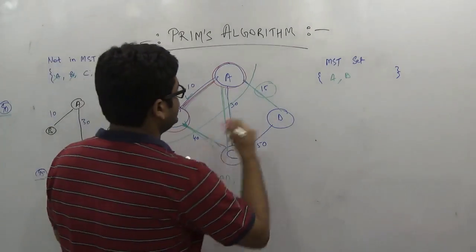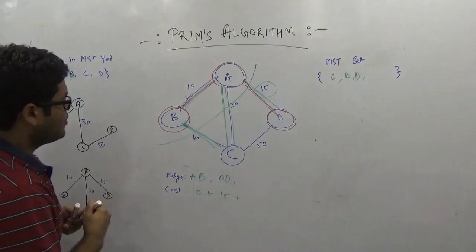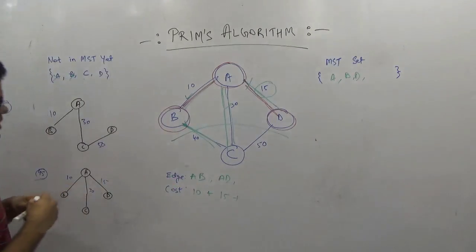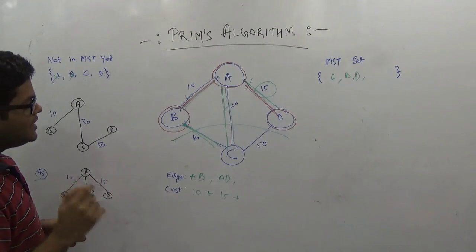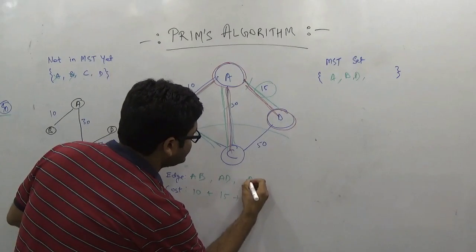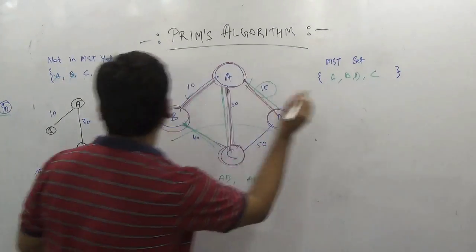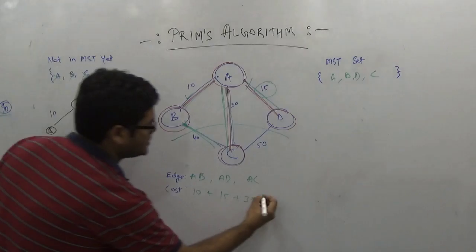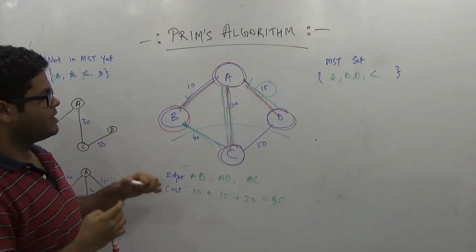Now we have also included vertex D in our MST set. Our MST set now includes three vertices: A, B, and D. Our MST set is connected to the remaining vertex C by three edges: BC, AC, and DC. The least cost edge is AC with cost 30, so we include AC. Now we have all vertices included, and our MST has a cost of 55.